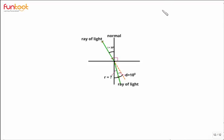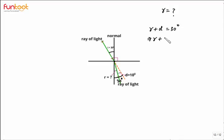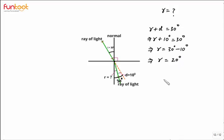The next part of the question is to find the value of R. We know vertically opposite angles are equal, and this angle is equal to 30 degrees, so this complete angle is also 30 degrees. From the figure, R plus D equals 30 degrees. Since D is given as 10 degrees, R plus 10 equals 30 degrees, which gives R equal to 20 degrees.